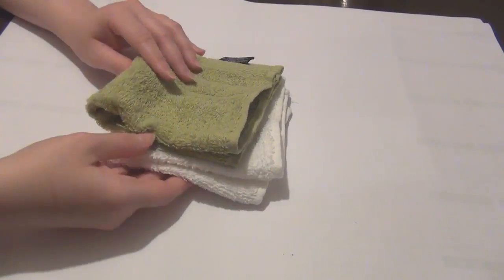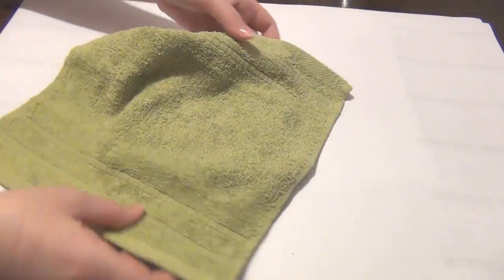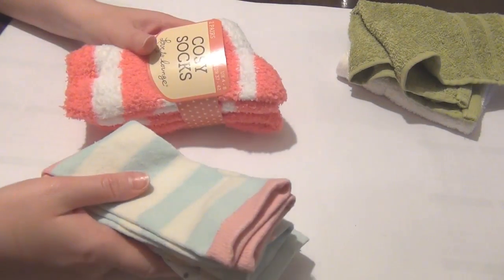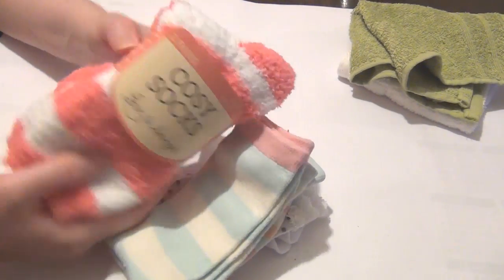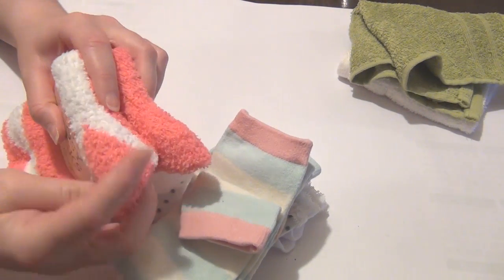So here are the materials you're going to need if you want to make all of the cakes. You will need two face towels and I've chosen a white and a green. You're also going to need some socks and I have some regular socks and I also have some of these cozy socks.